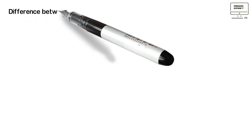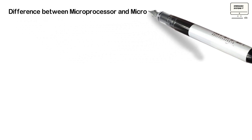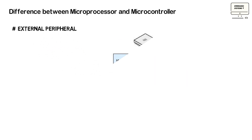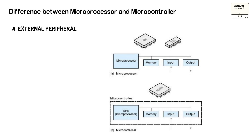Let's now discuss the differences between microcontroller and microprocessor. Now that we know the basics, it's gonna be easy to define the major differences. The first difference is the presence of external peripherals. As we said, the microcontroller has RAM, ROM, and EPROM memories embedded in it, whereas the microprocessor needs external memories.